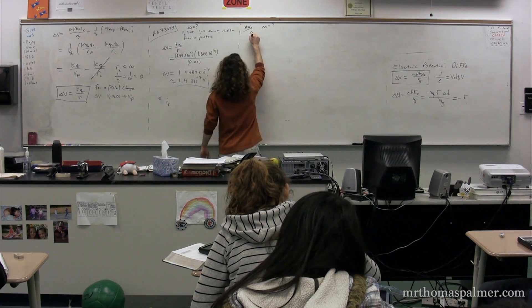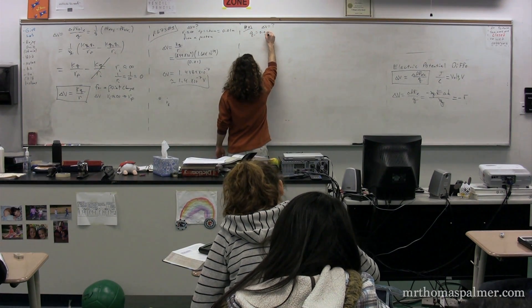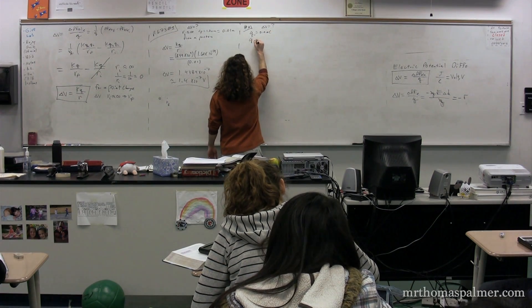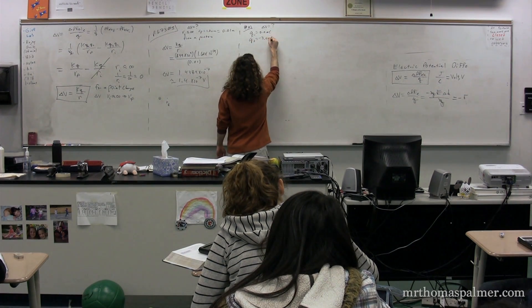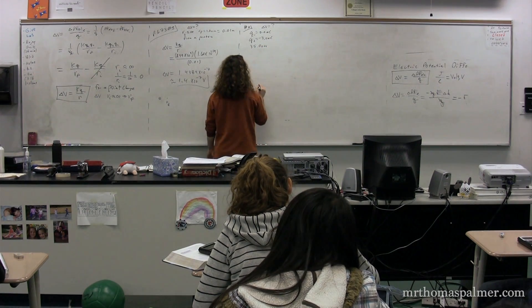Two point charges of magnitude 5.0 nanocoulombs and negative 3 nanocoulombs are separated by 35 centimeters. What is the potential difference between a point infinitely far away and a point midway between the charges?